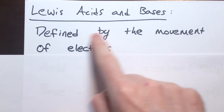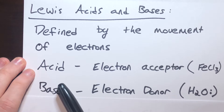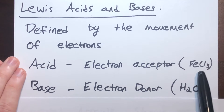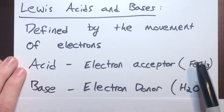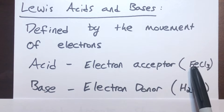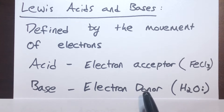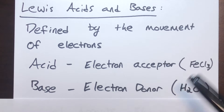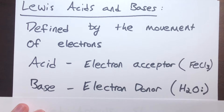Lewis acids are defined by the movement of electrons. An acid in the Lewis acid definition is an electron acceptor — something like iron chloride, FeCl₃. It is able to accept electrons because the iron can take another bond, creating a fourth bond, which makes it an acid. A base is an electron donor that can give two electrons — a lone pair — to the acid. These bases will have a lone pair or a charge which indicates a lone pair; it may not be explicitly shown.